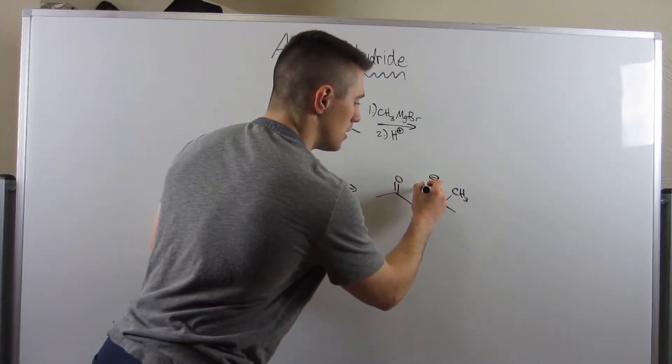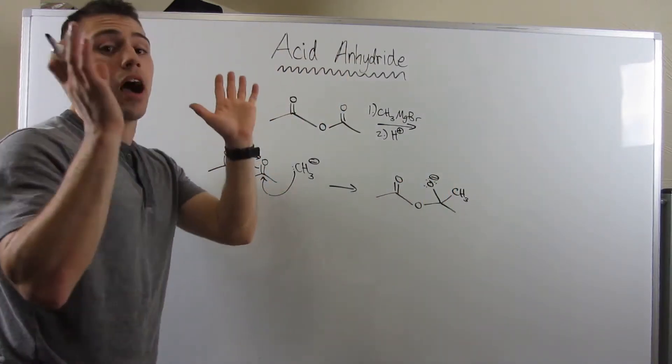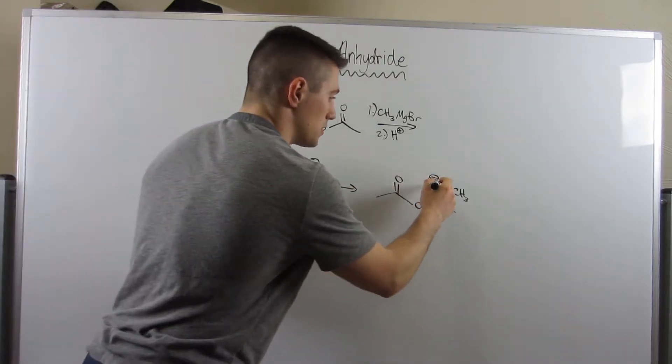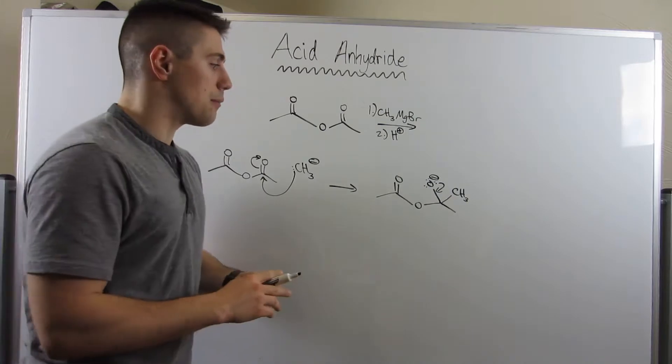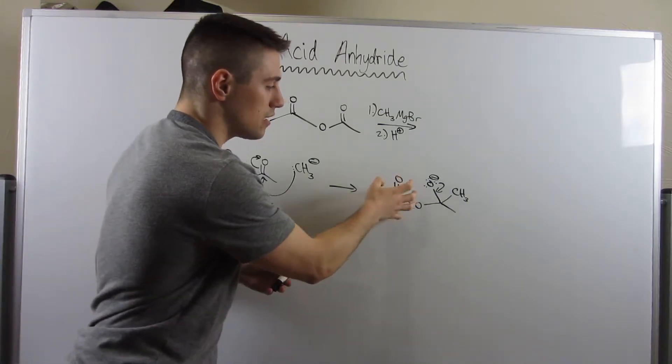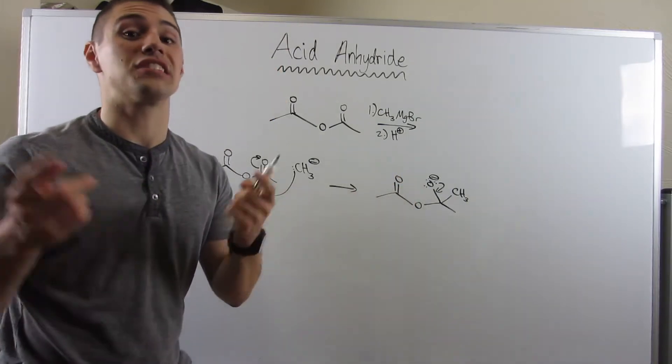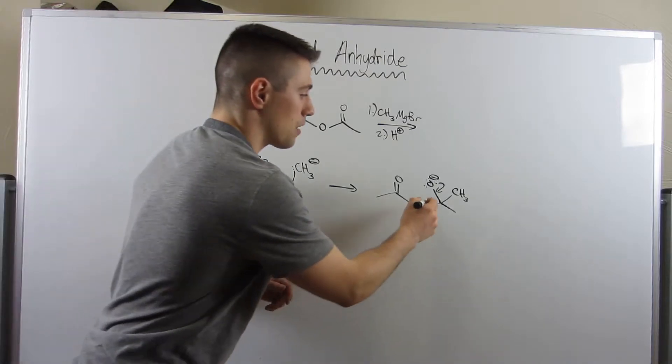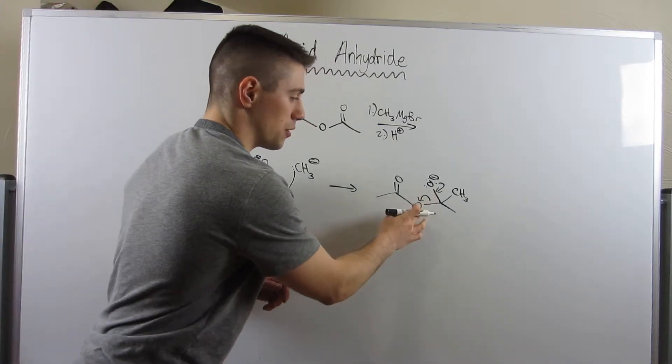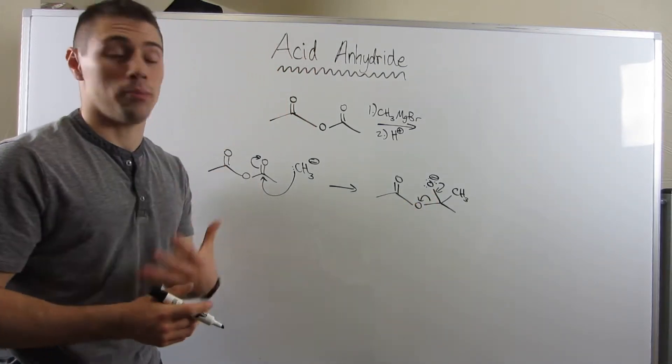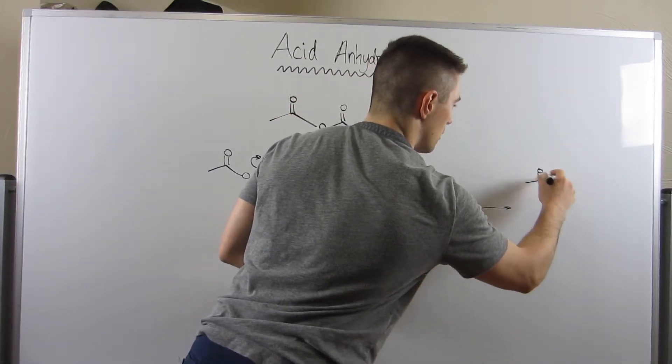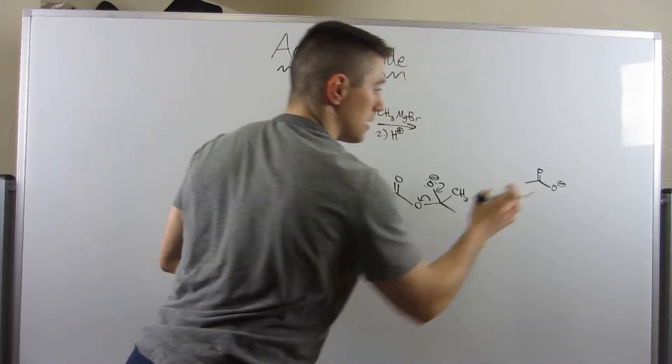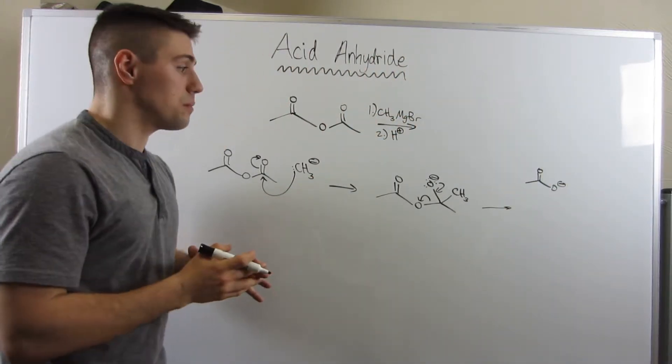Now, think about what I have to do. I have my tetrahedral intermediate. I'm going to collapse it. I'm going to swing these electrons down and now I need a good leaving group to kick off. And remember, this whole big thing is a good leaving group because it's resonance stabilized. So I'm going to break this bond, throw it onto this oxygen, and he'll take an O-. So he'll look like this. That's a good, weak, stable conjugate base.